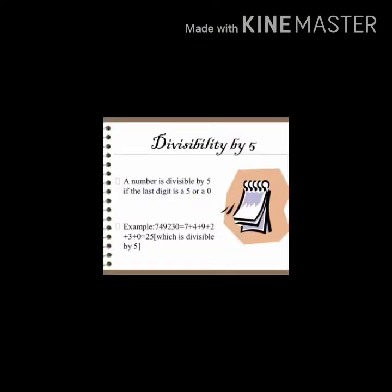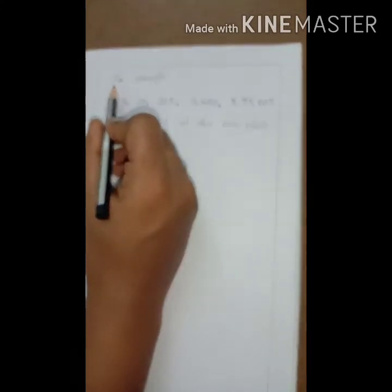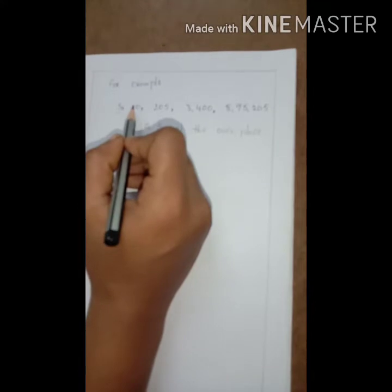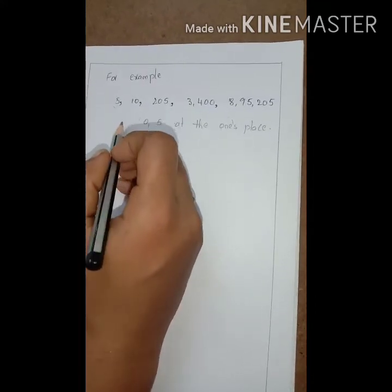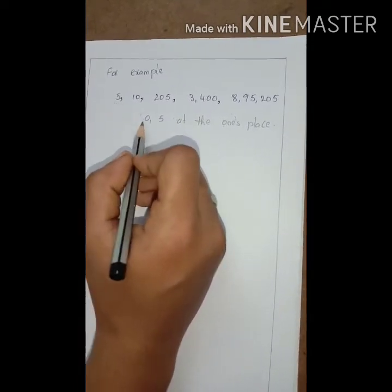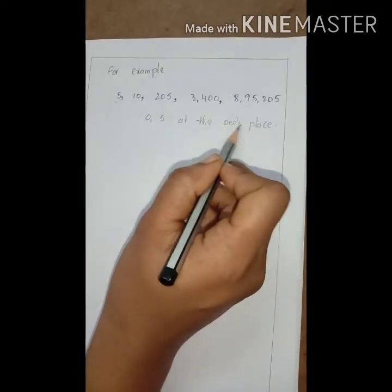Next is the divisibility rule by 5. To make solving easier, we apply the divisibility rule for 5, which states that if a number ends in 0 or 5, the number is divisible by 5. A number is divisible by 5 if it has either 0 or 5 at the one's place.